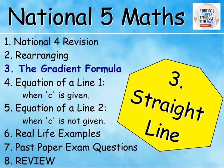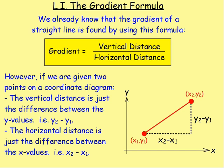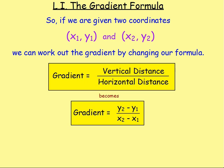After rearranging, we went on to look at the gradient formula. We know the gradient is the vertical distance divided by the horizontal distance. If we know two points — each with an x-coordinate and a y-coordinate — we call them point 1 and point 2. To work out the gradient, take the second y-coordinate minus the first y-coordinate, divide by the second x-coordinate minus the first x-coordinate. So the gradient formula becomes: m equals (y2 minus y1) over (x2 minus x1).